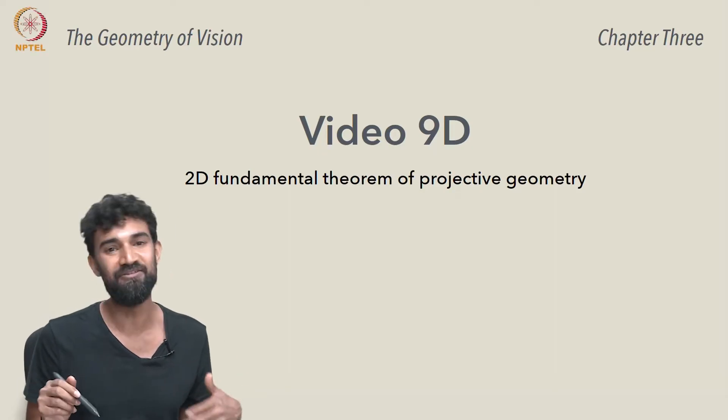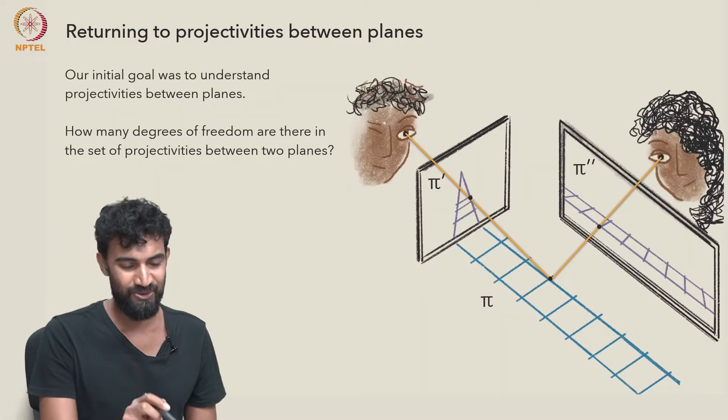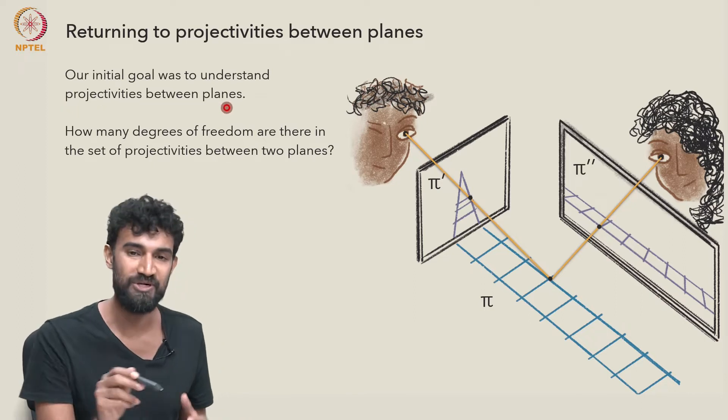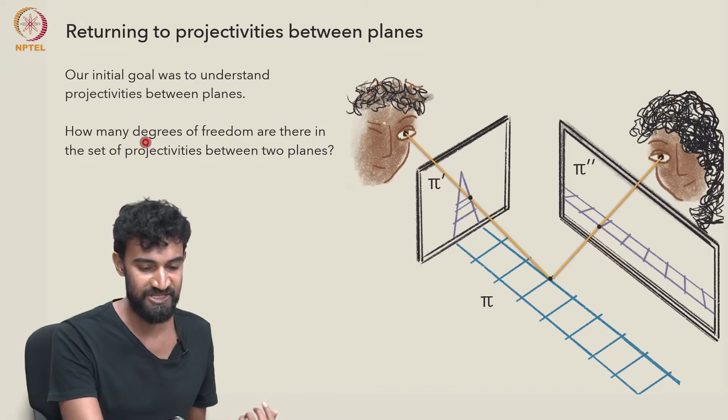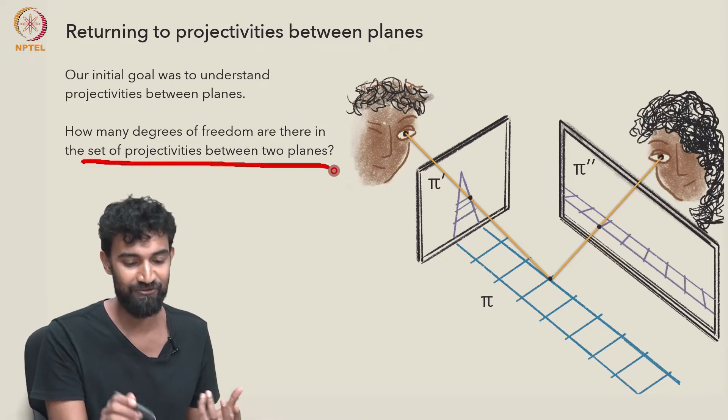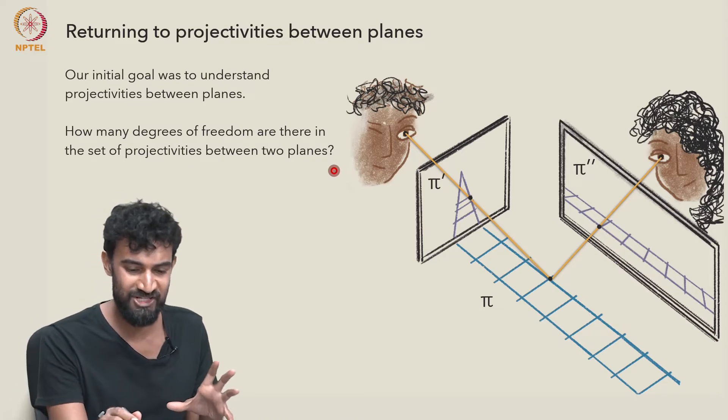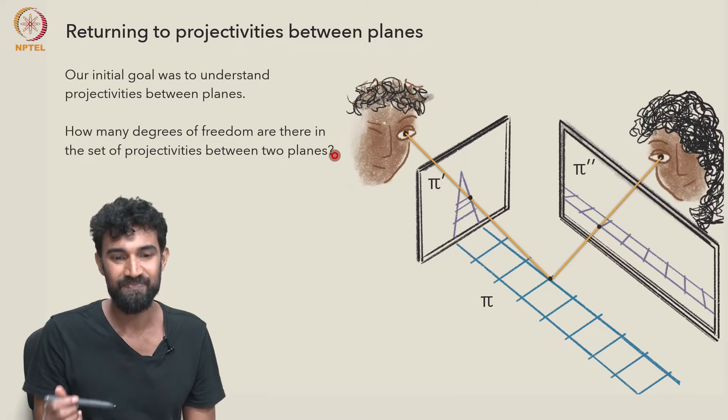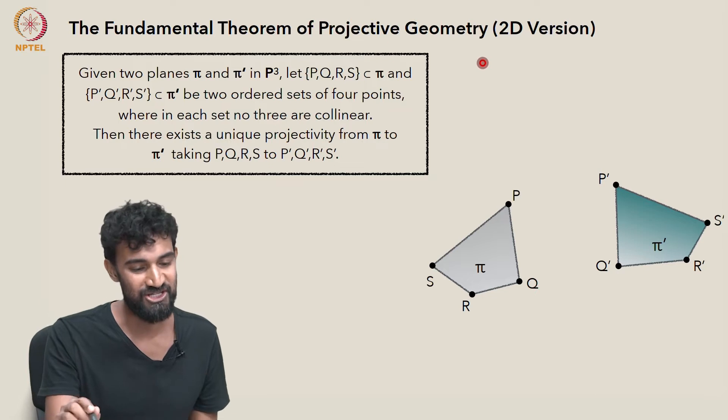Now let's look at the two-dimensional version of the fundamental theorem of projective geometry. Our initial goal was to understand projectivities between planes, in particular, how many degrees of freedom are there in the set of projectivities between planes, which is another way of saying what all changes as we shift perspective. This is our attempt to address that initial question.